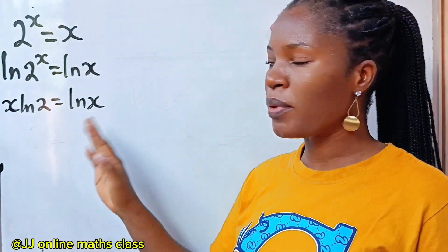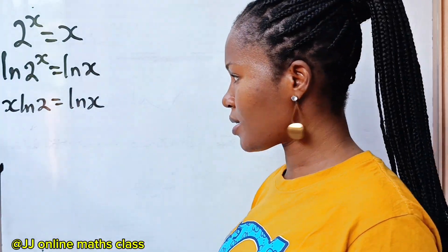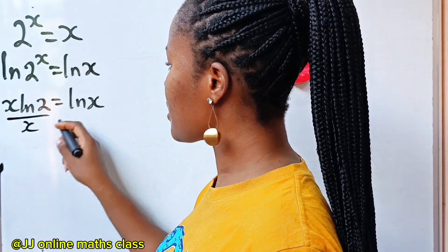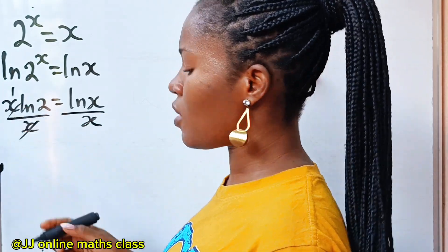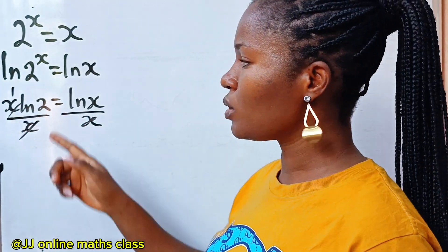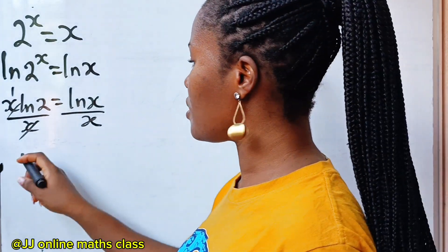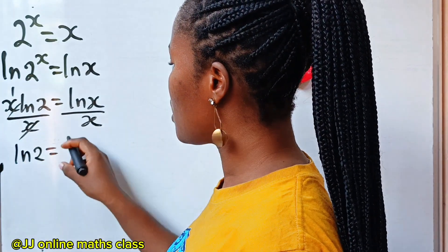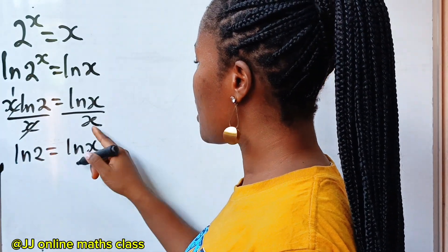Now let's divide both sides of this equation by x. So we divide this side by x and divide this side by x. x will divide itself to give us 1, and 1 times ln2 is ln2. So we have ln2 is equal to ln(x) over x.